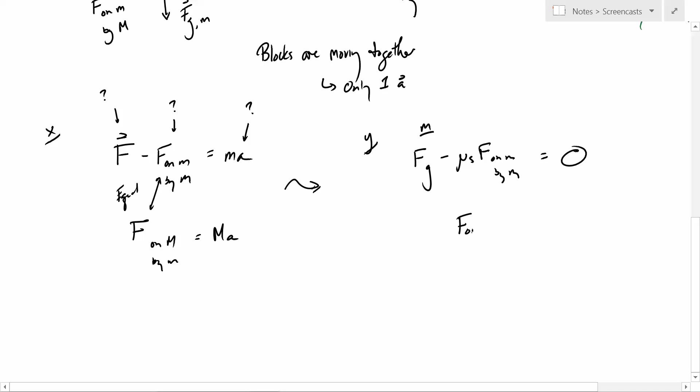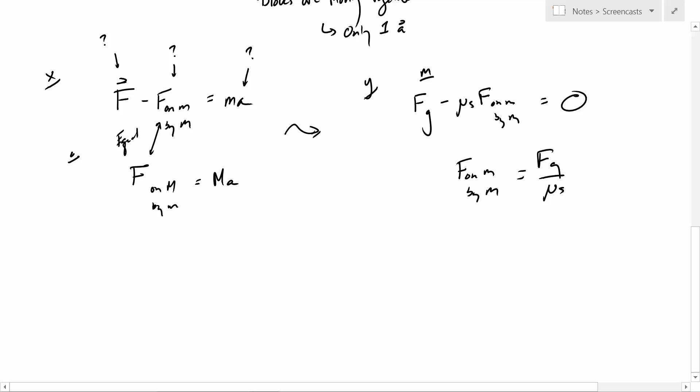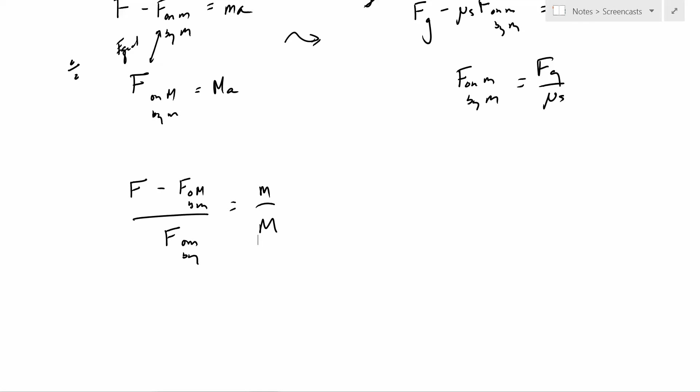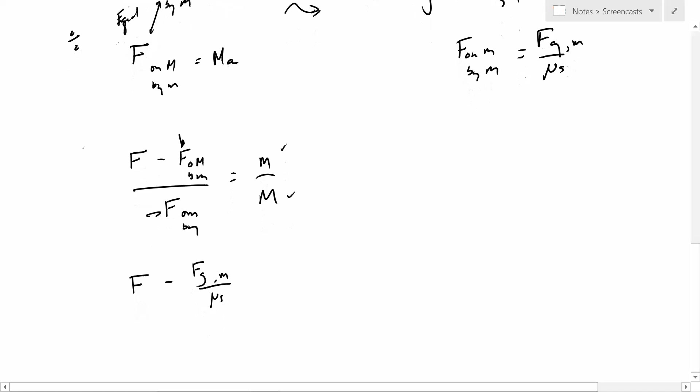So, I know this F on m by M then must be Fg by mu s. So if I come over here, I'm going to divide these two equations by each other. So I get F minus F divided by F is equal to m by M. So now, I know the m's. This thing, I got to figure out, I should point out little m. So, I'm now looking at something like this once I make the substitution.